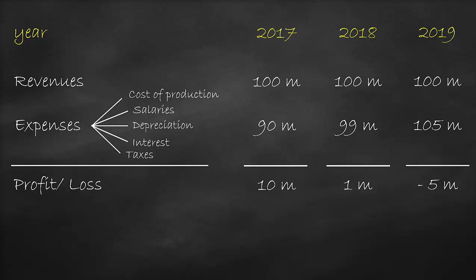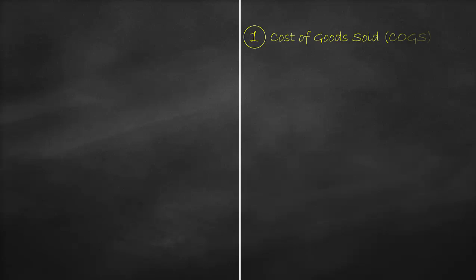This is what we call the multi-step income statement, and we have five types of expenses in a company. Firstly, we have the cost of goods sold, also known as COGS, which refers to the cost of production in terms of raw materials and blue-collar wages for workers who work on building machines, for example.